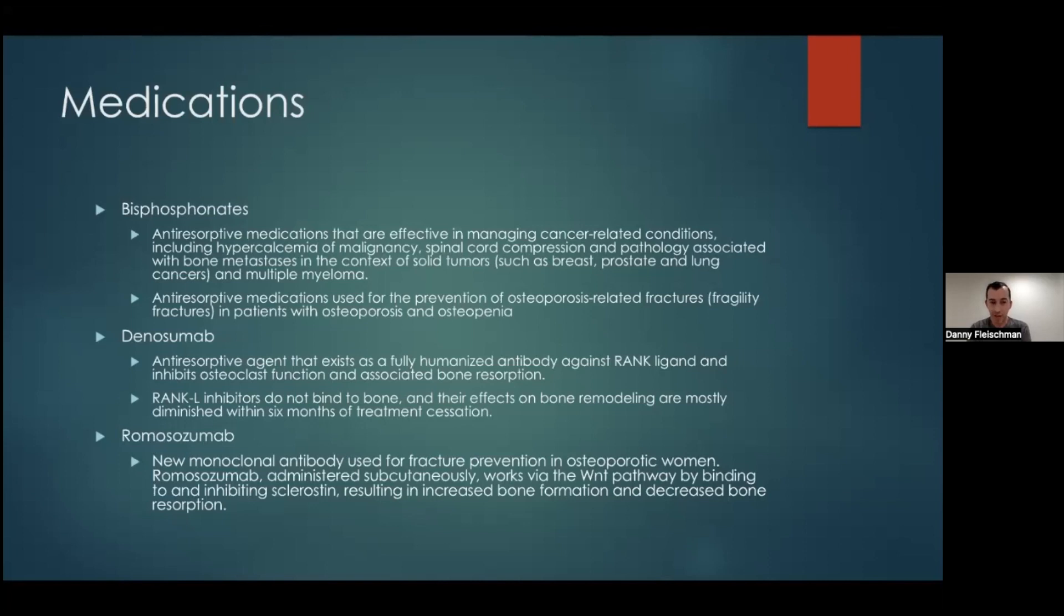Another class of medications that are anti-resorptive medications are denosumab, which are agents that exist as fully humanized antibodies against RANK ligand, and they inhibit osteoclast function and associated bone resorption. RANK ligand inhibitors, unlike bisphosphonates, do not bind to the bone, and their effects on bone remodeling are mostly diminished within six months of cessation of treatment. And that's why medications like Prolia, which is denosumab, is given every six months.